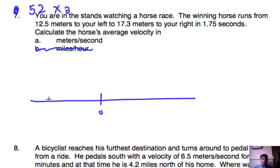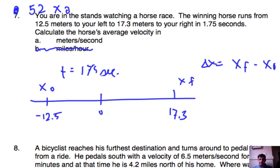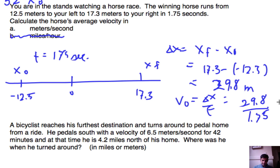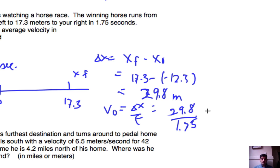So what we'll do is this. We've got a horse. So I'm here. The horse runs from negative 12.5 to 17.3. So this is x initial, this is x final, and the time is 1.75 seconds. So once again, x final minus x initial is delta x. And let's just plug in our numbers. So that's going to be 17.3 minus negative 12.5, which ends up giving me 29.8 meters. So the velocity is going to be delta x over time, which is 29.8 divided by 1.75 seconds. So when I go ahead and get that, we end up actually getting 17 meters per second.